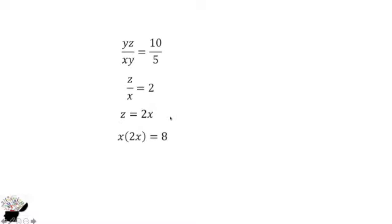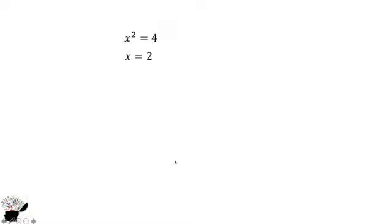Now we are going to substitute it in equation 2. We have x into bracket 2x is equal to 8. Now we have 2x squared is equal to 8. We have x squared is equal to 4. So from here, x is equal to plus or minus 2.